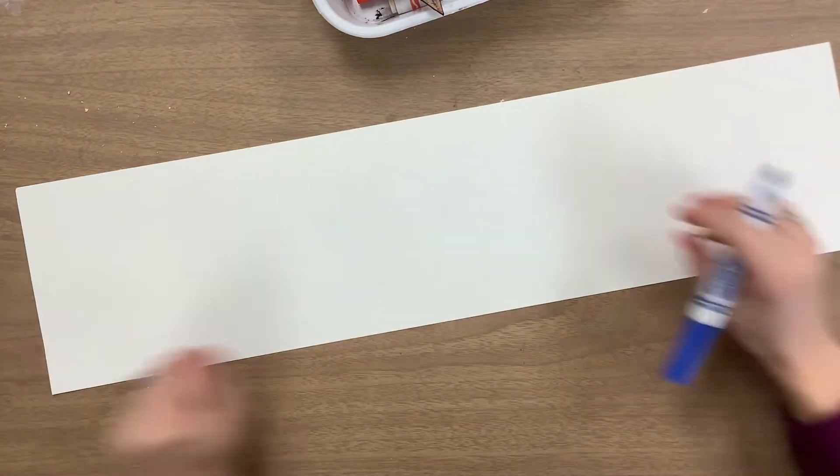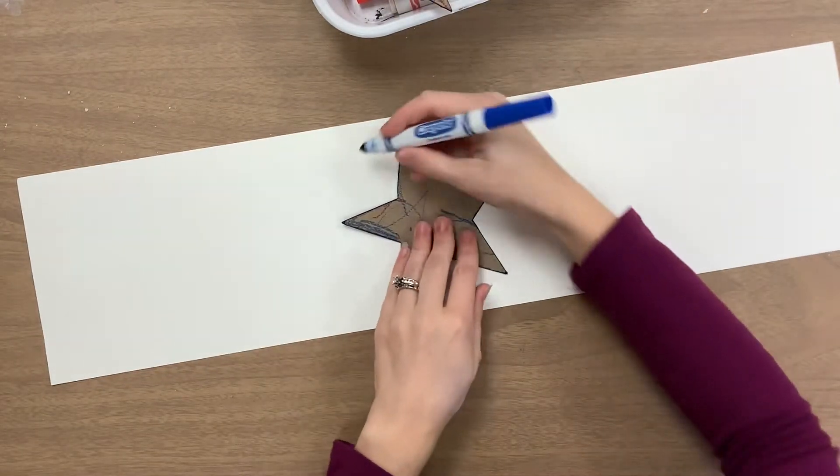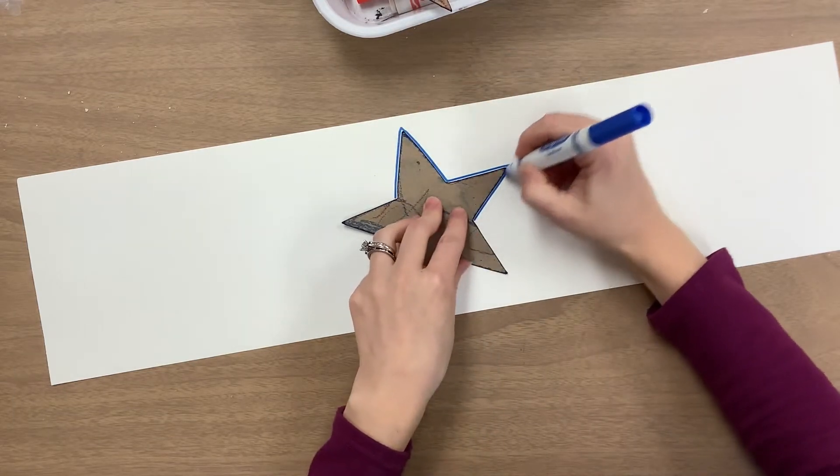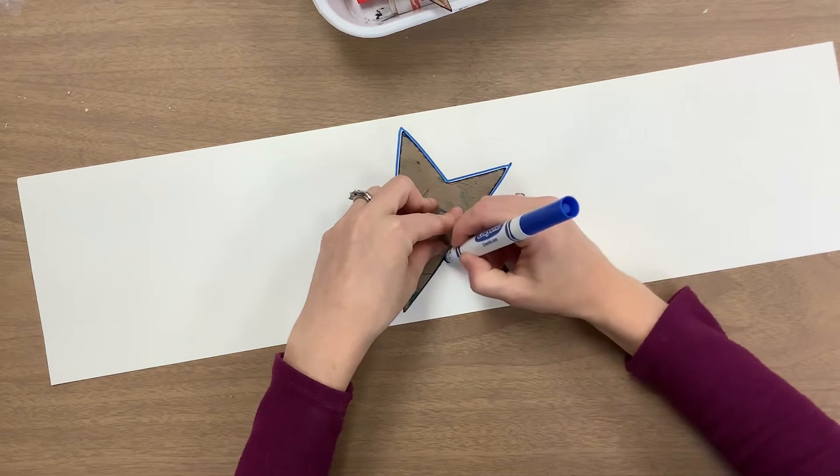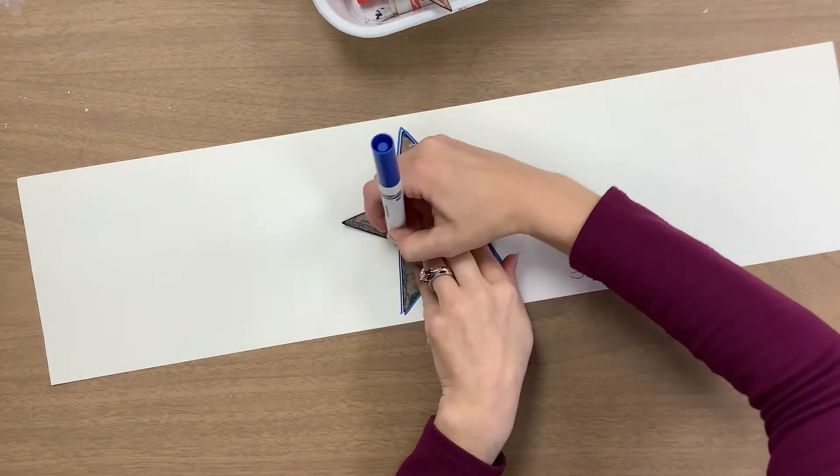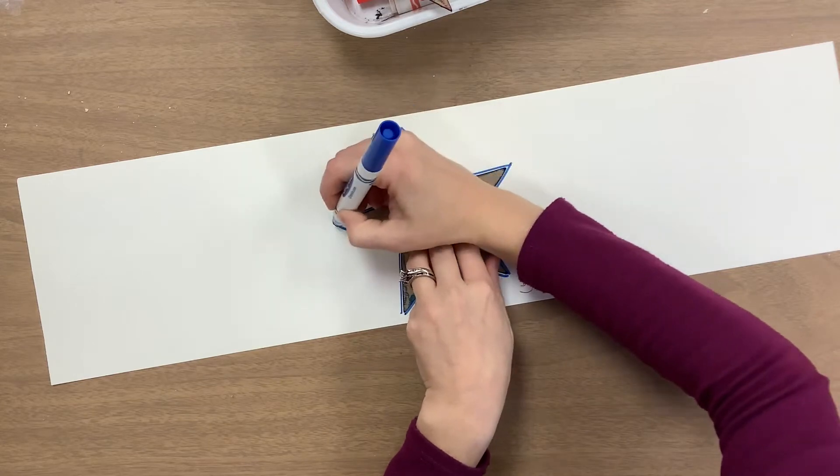Then you'll flip it over and you can start to trace your stars. Using the markers, we just have the red and blue. We want to keep it very patriotic with the red, white, and blue colors. So we're just using red and blue today. Trace around your stars as many times as you would like.